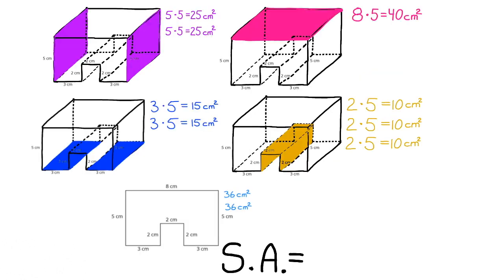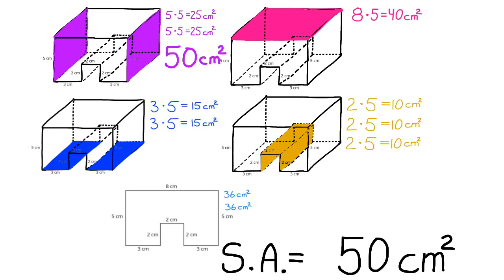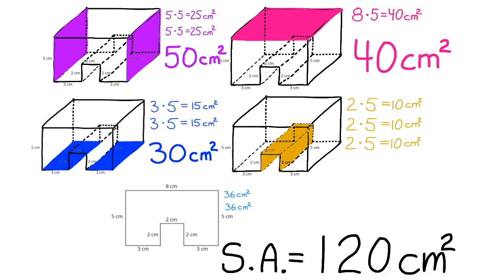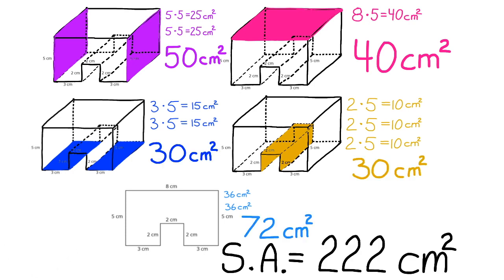Now to find the total surface area for the entire prism, we have to add up all the surface areas for each of the sides and bases. 50 plus 40 plus 30 plus 30 plus 72. So the surface area for the entire prism is 222 centimeters squared.